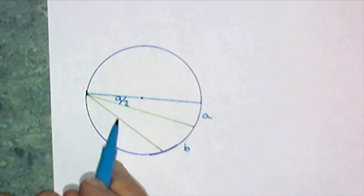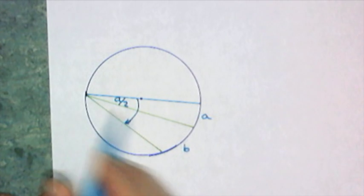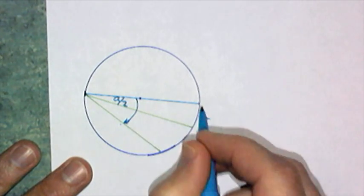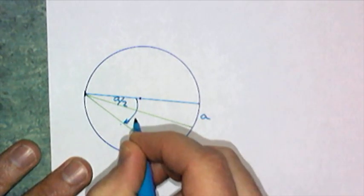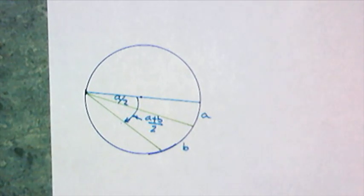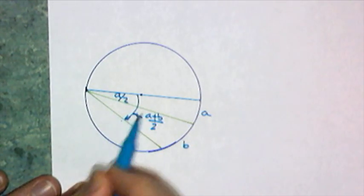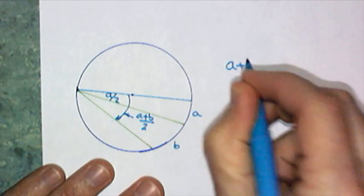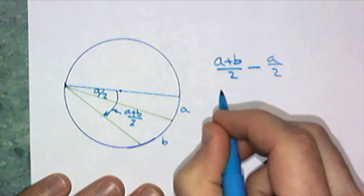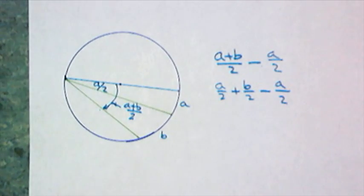So this is half of A, A divided by 2, by case 1. Now I don't know what this measurement is. However, I do know what this is, because that's another big case 1. So this one is going to be half of A plus B. So this one is A plus B divided by 2. And if I want to know just what the green arc is, all I have to do is take the big one, subtract the smaller one. So that's A plus B over 2 minus A over 2.